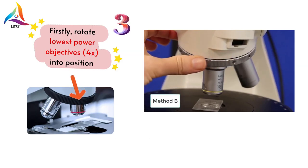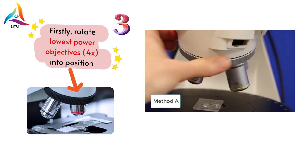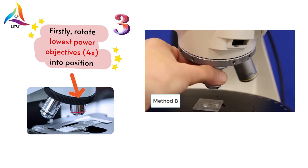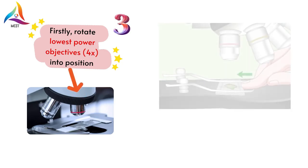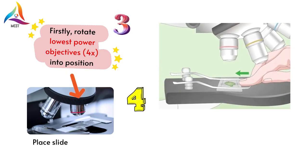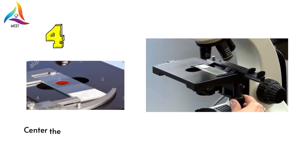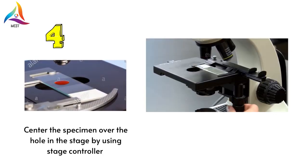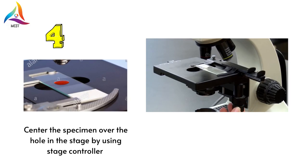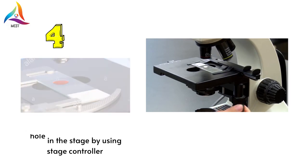Thirdly, rotate the lowest power objective lens, the 4x lens, into position. As the fourth step, put a slide on the stage and then place the specimen at the center over the hole of the stage. The position of the slide can be moved by using the stage controller.